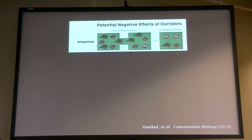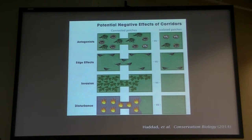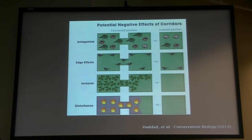Do they promote the movement of antagonistic species — especially predators, parasites, disease — that have harmful effects on the organisms we're trying to conserve? Do they create negative edge effects? Do they increase the invasion of plants or animals, or spread unwanted disturbance? I'm not going to tell you all the results of this review, except to say that for the most part we don't have to worry about the negative effects. They're far outweighed by the positive effects of corridors on dispersal, diversity, and other measures.